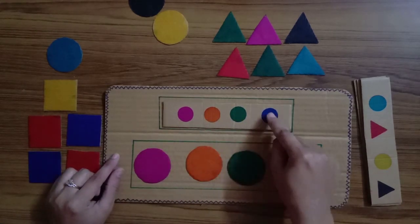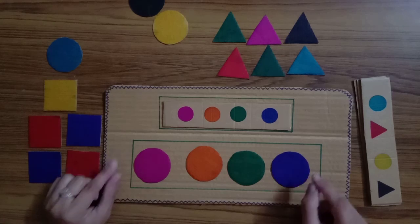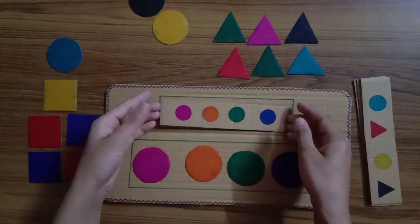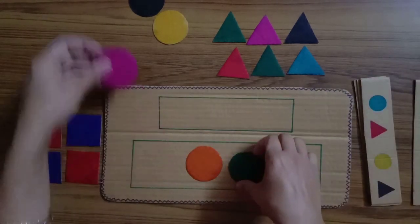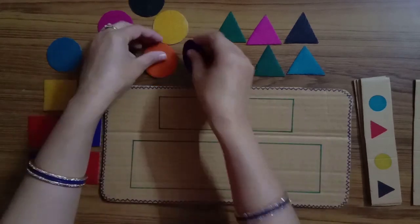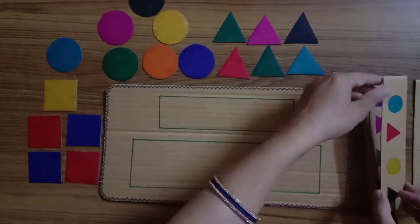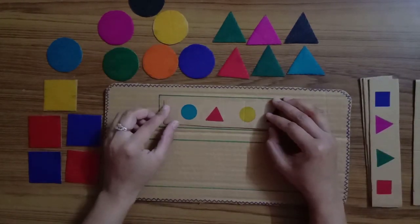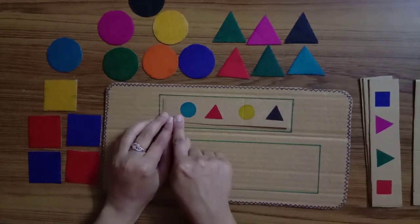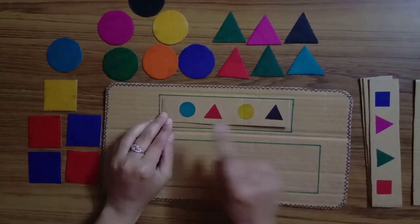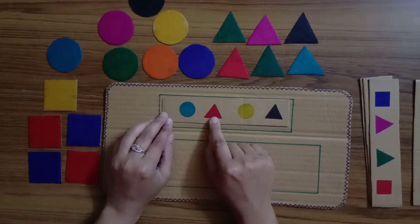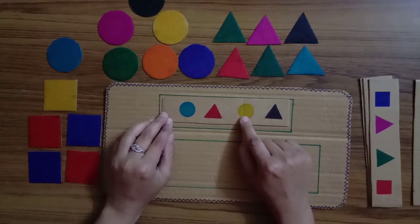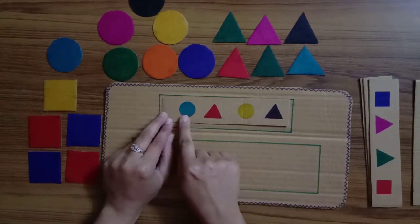Like this we can do this activity. For example, if I take another card which is this one, I'll put it here and ask the child to see all the shapes and colors aloud. So blue circle, red triangle, yellow circle, and a black triangle. Repeat: blue circle, red triangle, yellow circle, and a black triangle.